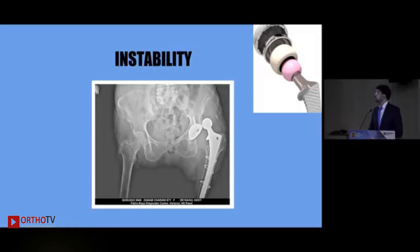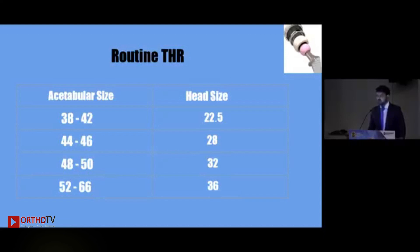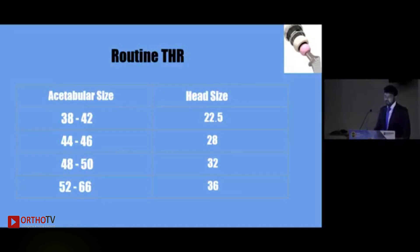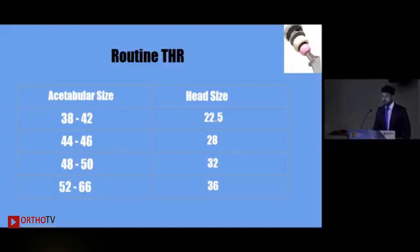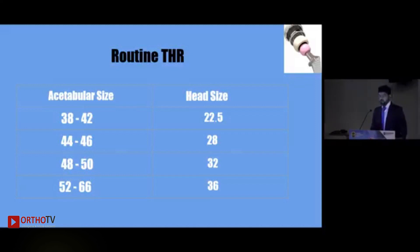In a routine total hip replacement, the acetabular head size depends on the acetabular size being used. If the acetabular size is 38 to 48 mm, we use a 22.5 mm head. For 44 to 46 mm we use 28 mm, for 48 to 50 mm we use 32 mm, and for 52 to 56 mm we use a 36 mm femoral head.